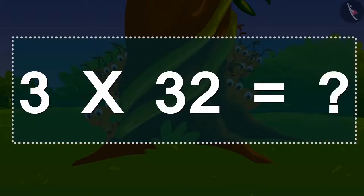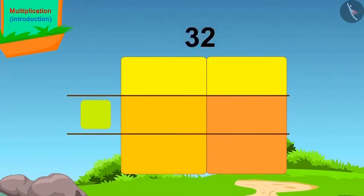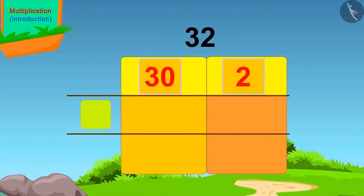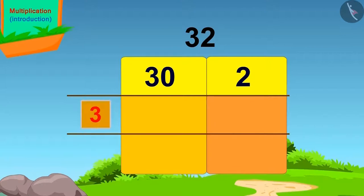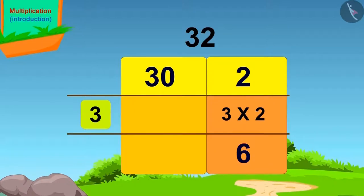We do not know the multiplication table of 32. What we will get if we split 32? 30 and 2. We will write it this way. What is the number we have to multiply 32 with? 3. We will write 3 here like this. Now we will multiply the first 2 by 3. 3 times 2 is 6. We will write this answer here.